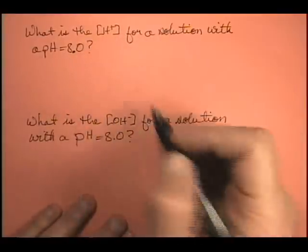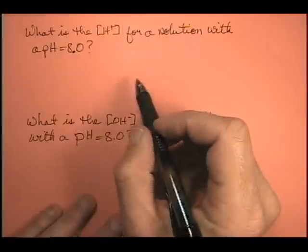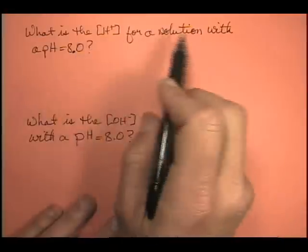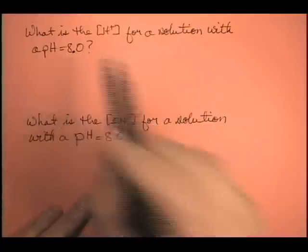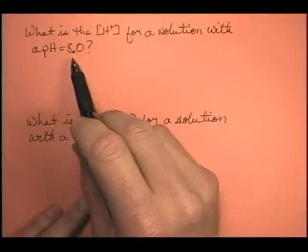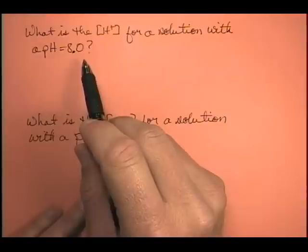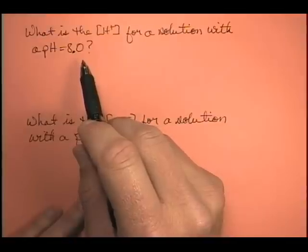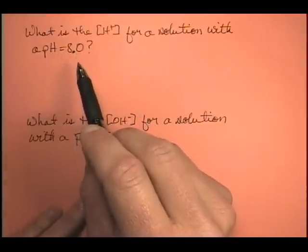We have to answer a couple of questions first. Is this an acidic or basic solution? We don't have a formula to check, but we have the pH. Acidic solutions have pHs below 7, and basic solutions have a pH above 7, so we know that this is a basic solution.